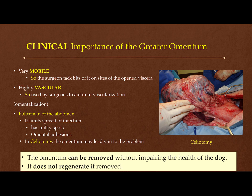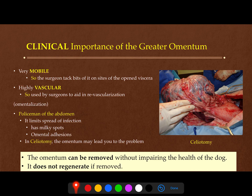The clinical importance of the greater omentum: since the greater omentum is very mobile, surgeons sometimes take bits of the greater omentum to fix open viscera, anchoring it so that when it heals it can still move because the greater omentum is movable. Since the greater omentum is vascular, it can be used by surgeons to aid in revascularization of some areas, especially in chronic conditions. This process is called omentalization, where we use the greater omentum to enhance the process of healing.